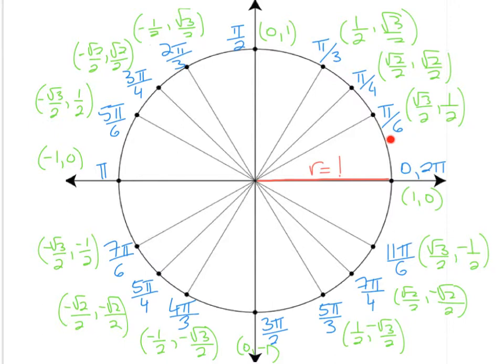So π over 6, then 2π over 6 gives you π over 3 because it reduces — that's 60 degrees. 3π over 6 reduces to π/2, which is 90 degrees. 4π over 6 reduces to 2π over 3. Then 5π over 6. 6π over 6 reduces to π. Then 7π over 6, 8π over 6, 9π over 6, 10π over 6, 11π over 6, and 12π over 6 is 2π.